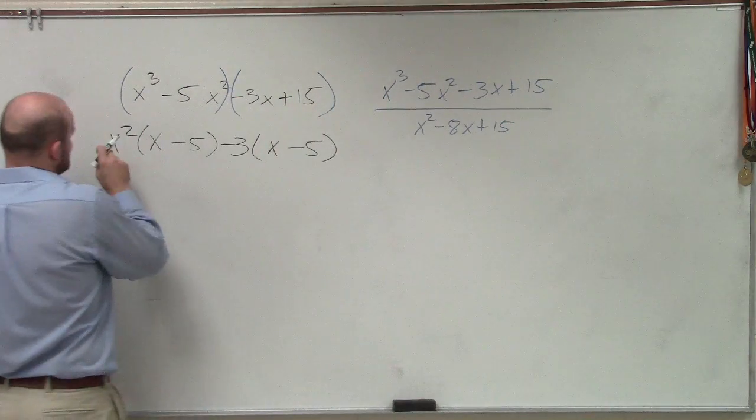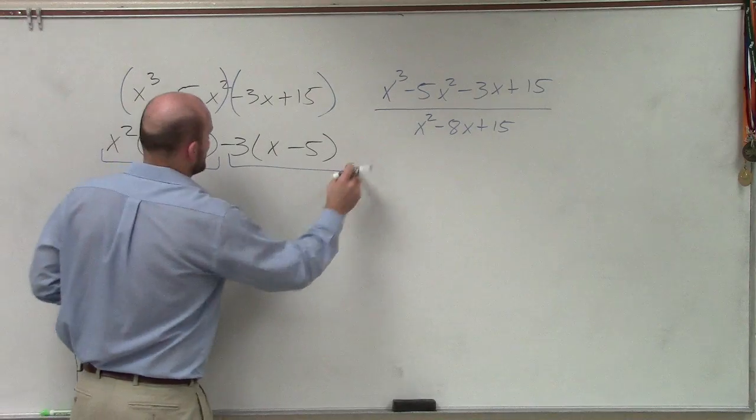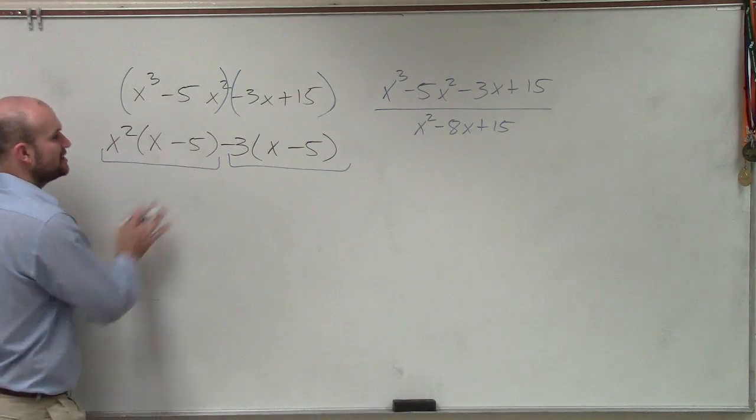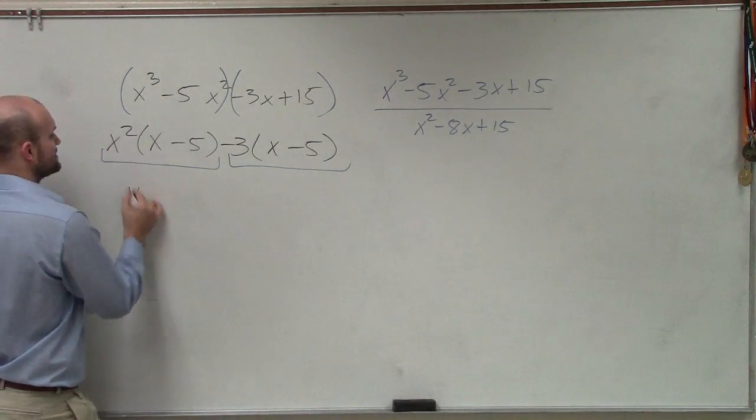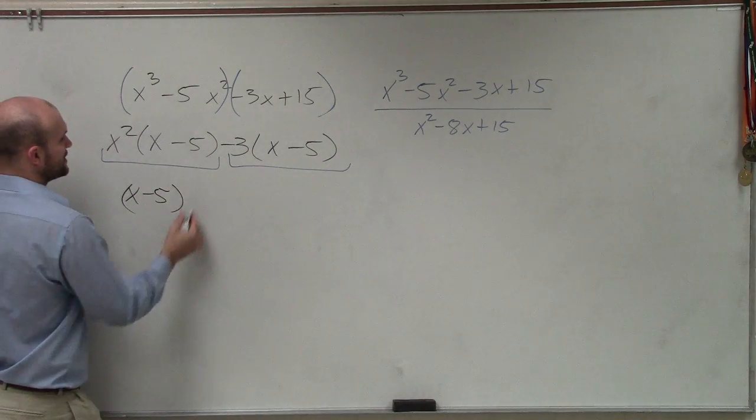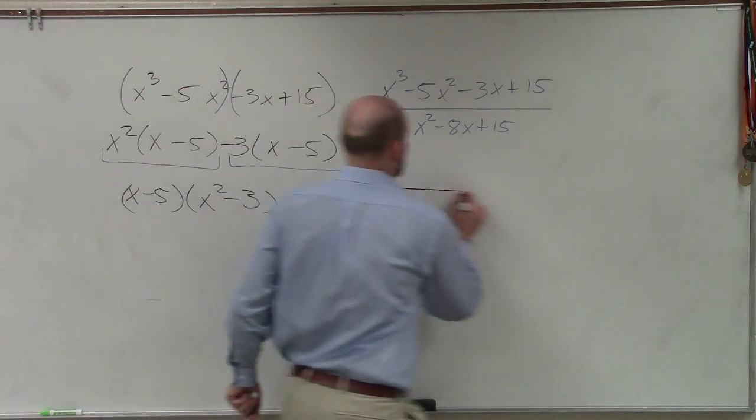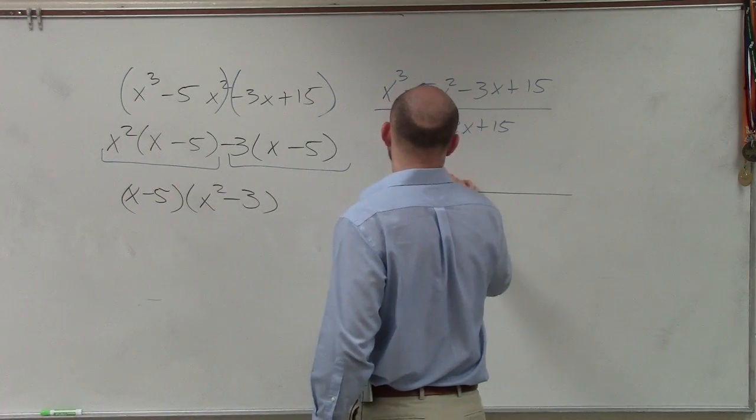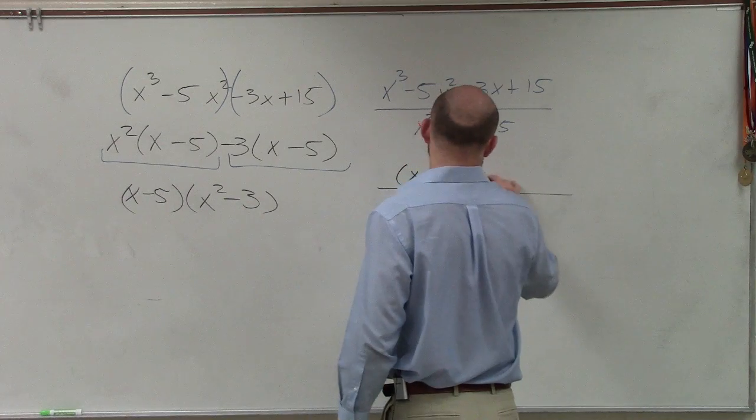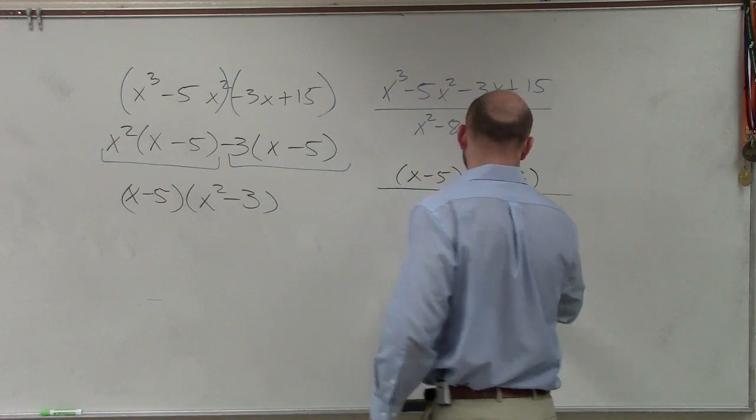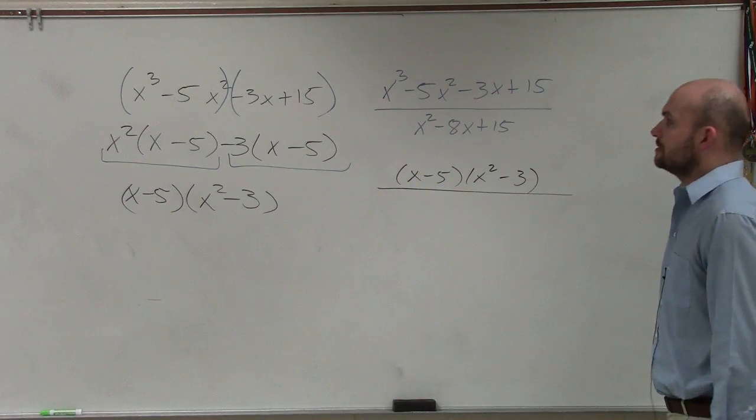So here you can see that on each of these two terms, because now they're separated by subtraction, the only thing they have in common is an x minus 5. So when I factor out an x minus 5, I'm just left with an x squared minus 3. So now I'm going to rewrite my expression to have x minus 5 times an x squared minus 3.